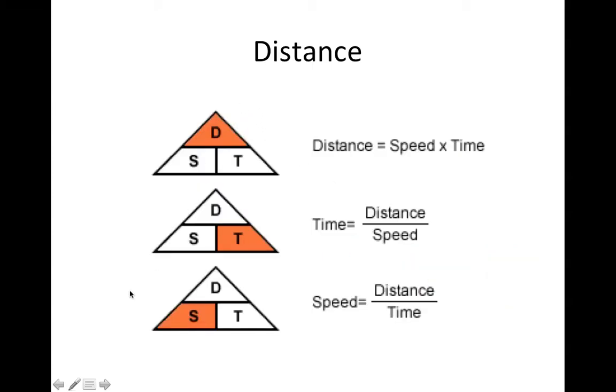Alright, so what this all means is, we have our formulas. We use this distance triangle and what you see is here, distance is highlighted in orange and it tells you that distance equals speed, which is next to time. So speed multiplied by time. Time, however, when it's highlighted, has distance over speed. So we're going to say time equals distance divided by speed. And speed also has distance on the numerator. So we're going to say speed equals distance divided by time. Again, pause this, write down the formulas.